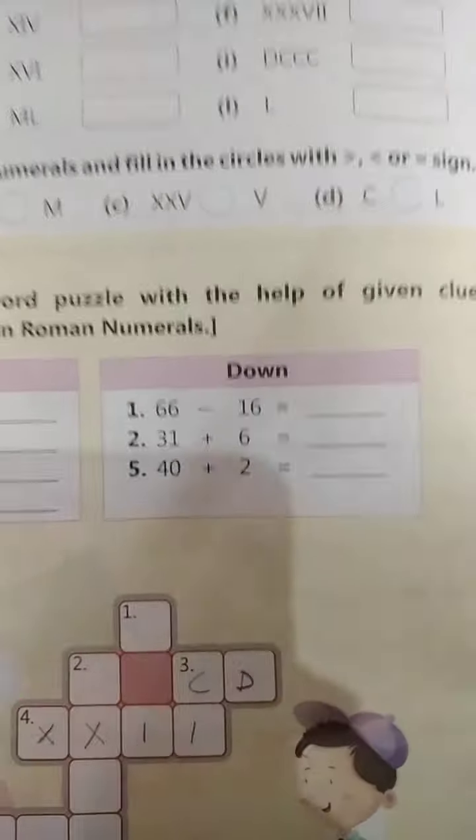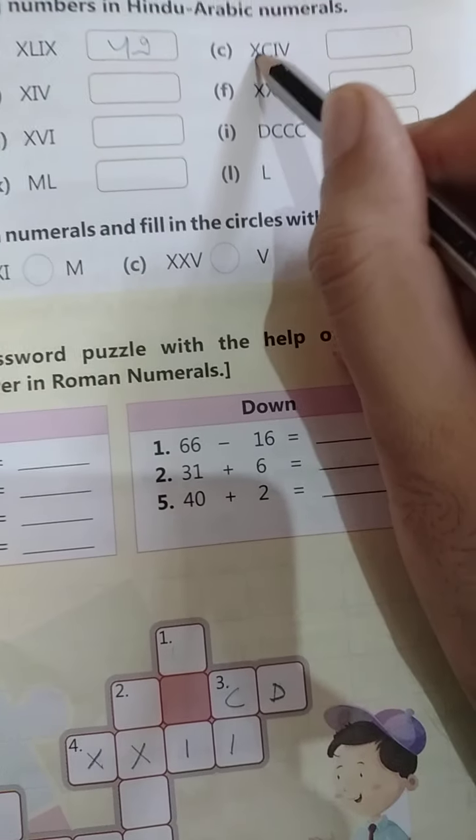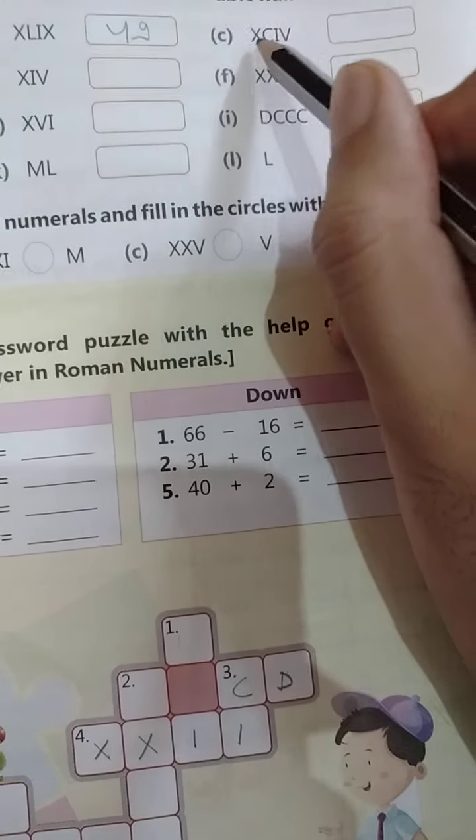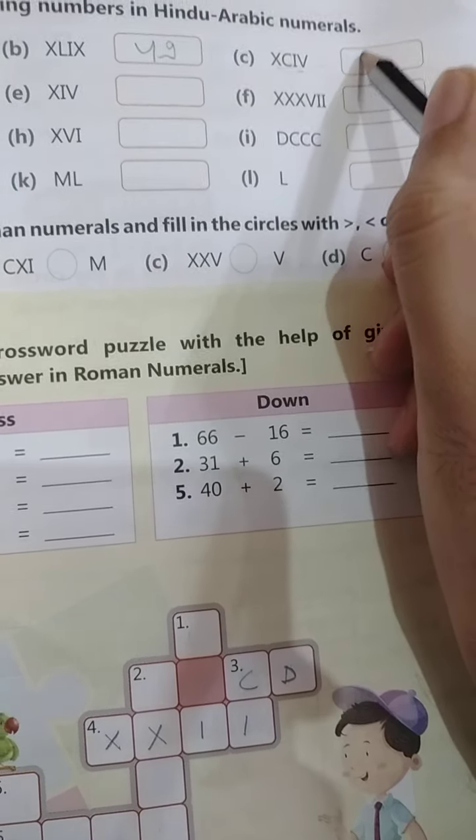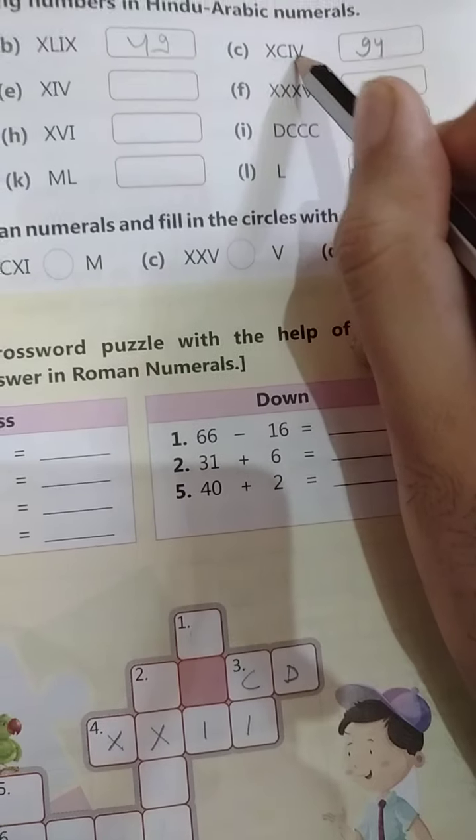Okay students, so next we will do this. The biggest one is C. 100 minus 10 is 90. What is added in 90? What is added? 4. This is 4. Right side is addition, left side is subtraction.